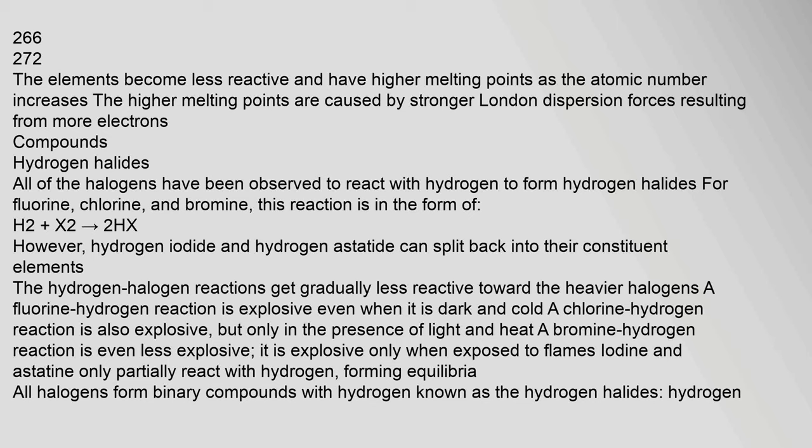Compounds — Hydrogen halides: All of the halogens have been observed to react with hydrogen to form hydrogen halides for fluorine, chlorine, and bromine. This reaction is in the form of H2 + X2 → 2HX. However, hydrogen iodide and hydrogen astatide can split back into their constituent elements. The hydrogen-halogen reactions get gradually less reactive toward the heavier halogens. A fluorine-hydrogen reaction is explosive even when it is dark and cold. A chlorine-hydrogen reaction is also explosive, but only in the presence of light and heat. A bromine-hydrogen reaction is less explosive — only when exposed to flames. Iodine and astatine only partially react with hydrogen, forming equilibria.